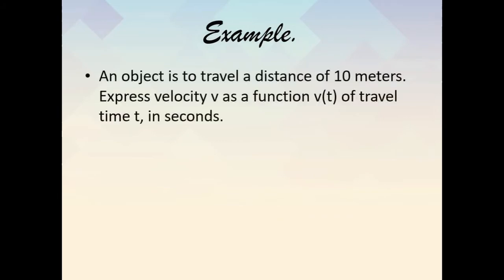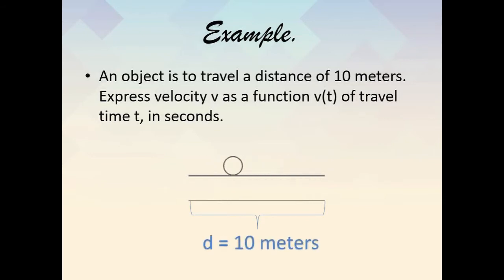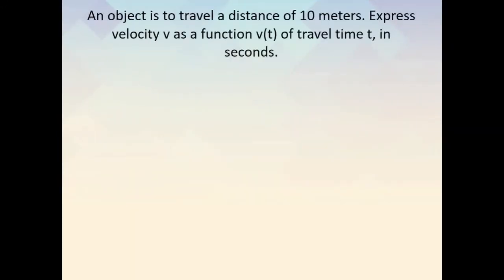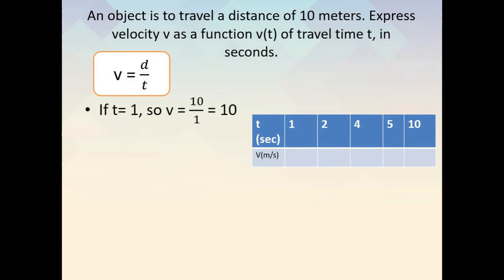Example: An object is to travel a distance of 10 meters. Express velocity v as a function v of t of travel time t in seconds. The distance is 10 meters, and as you learned in science class, velocity is equal to distance over time, so v is equal to d over t. If t is equal to 1, then v is equal to 10 over 1, so the velocity is 10 meters per second.